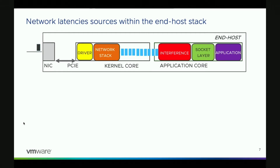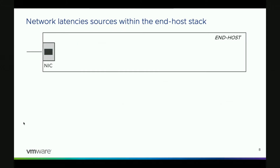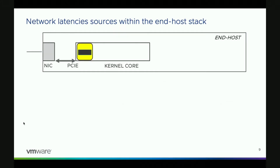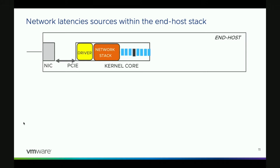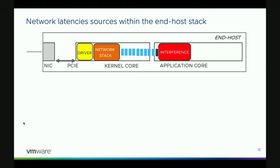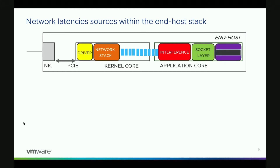These sources can be anywhere in the network stack. Here is a cartoon of the network stack. A packet enters the NIC, is processed there, and is then picked up by the NIC driver running on the CPU core. It is then handed to the higher layers of the network stack, and in this process it can go through multiple queues and will be handed to user space through another queue. As it goes through this pipeline, it can encounter interference anywhere that can slow it down. In the end, it reaches the socket layer, after which it is picked up by the application.